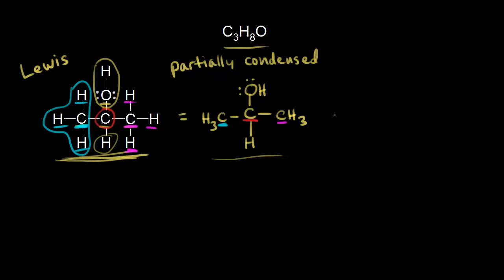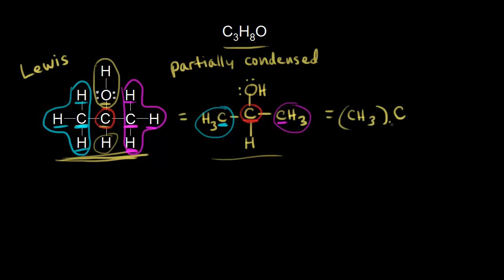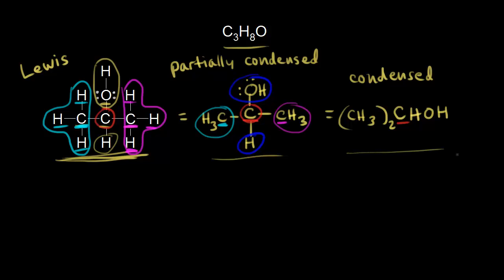We could keep going to a fully condensed structure. Focusing on the carbon in red: that carbon is bonded to two CH3 groups, so we write CH3 with a subscript two. The carbon is also bonded to a hydrogen and an OH. This is the fully condensed version — notice there are no bonds drawn in here. You have to infer the bonding from the condensed structure.